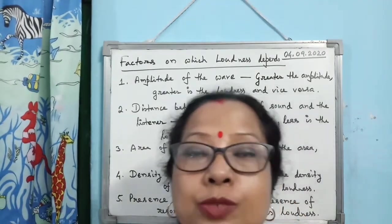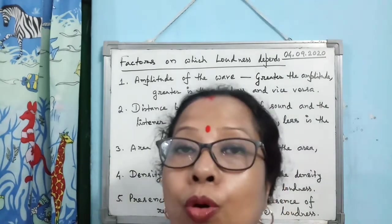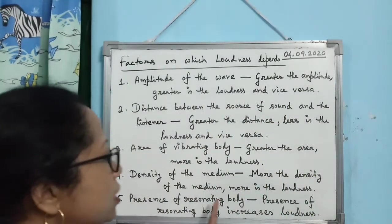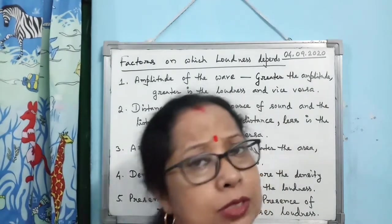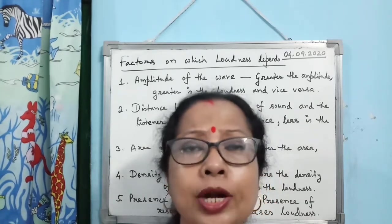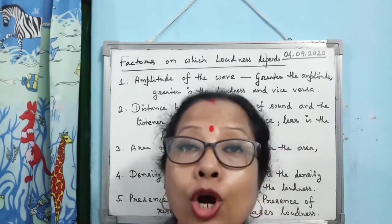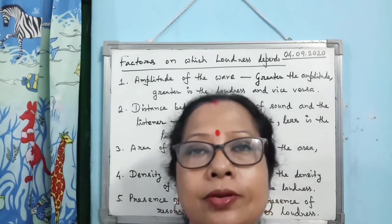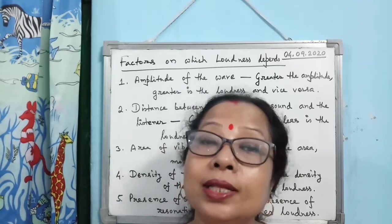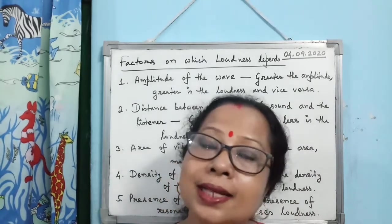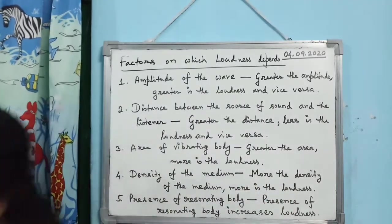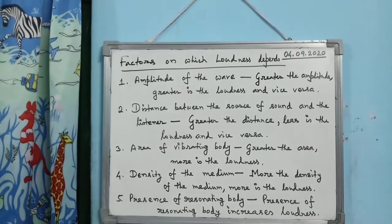The fourth factor is the density of the medium through which sound propagates — greater the density of the medium, greater will be the loudness. The fifth factor is the presence of a resonating body. Musical instruments always have a hollow box or container beneath the vibrating body; the air inside acts as the resonating body, which increases the loudness.